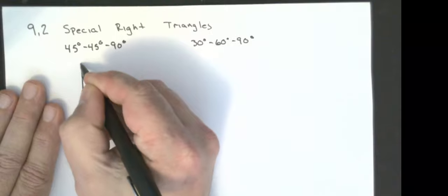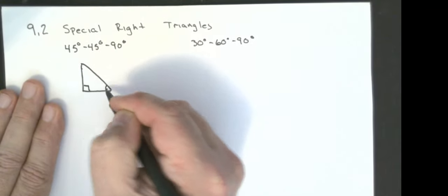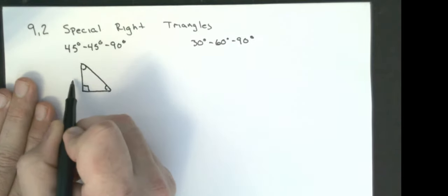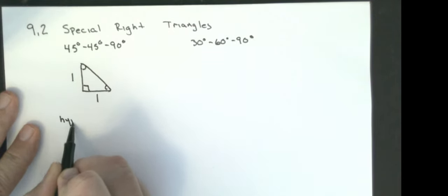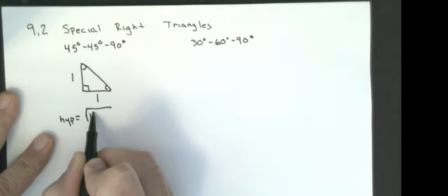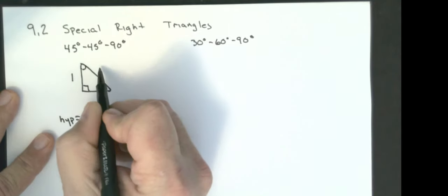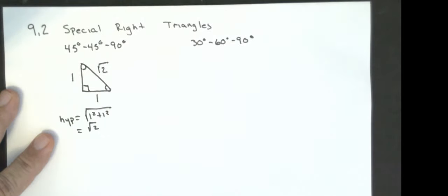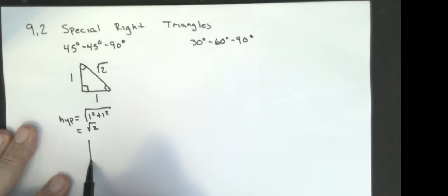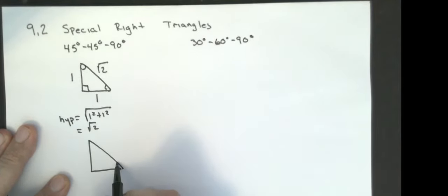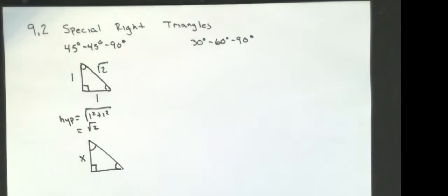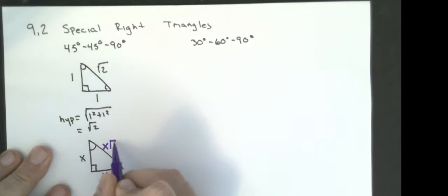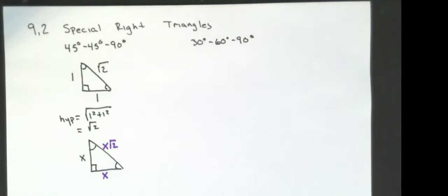So this is a 45-45-90 triangle. These two legs are the same. If the legs are both one, the hypotenuse is the square root of one squared plus one squared, which is the square root of two. That means if my leg is any value, the other leg is the same, and the hypotenuse is just that value times the square root of two.